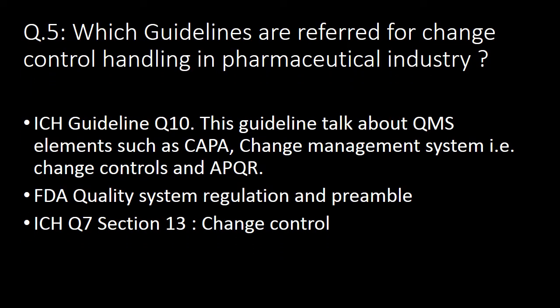Which guidelines are referred to for change control handling in the pharmaceutical industry? ICH Q10 is the most commonly referred guideline. This guideline covers QMS elements such as CAPA, change management system, and APQR. Additionally, FDA quality system regulation and preamble, and ICH Q7 section 13 on change control, are also referred to.